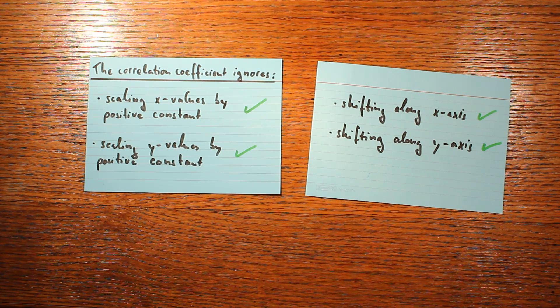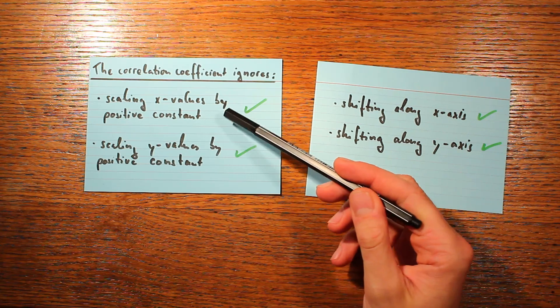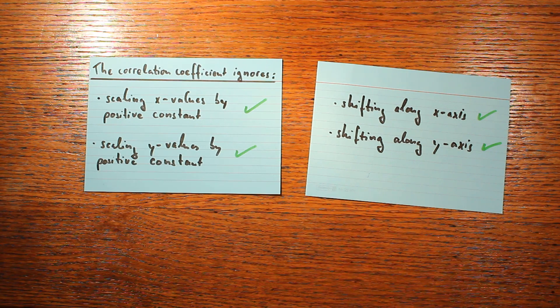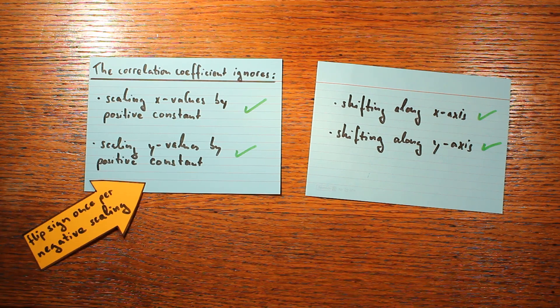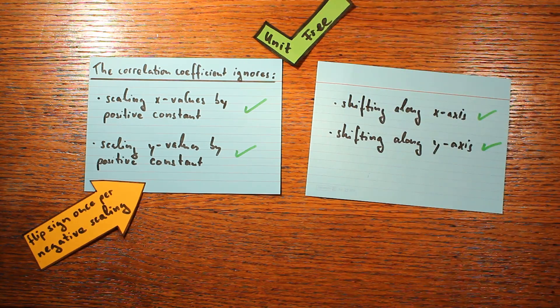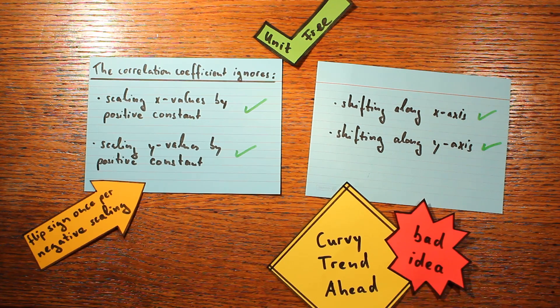To summarize: the correlation coefficient doesn't care if you scale the data along the x or y-axis with a positive constant. If you scale with a negative constant along one axis, the magnitude stays the same and only the sign switches. It also doesn't care about shifting the data by adding constants to x or y values. This makes the correlation coefficient independent of units, which is very useful. However, it fails to capture unusual non-linear shapes in the data, so watch out for that. In the next videos, we'll look at some little-known and surprising paradoxical effects when it comes to correlation.